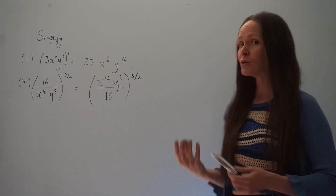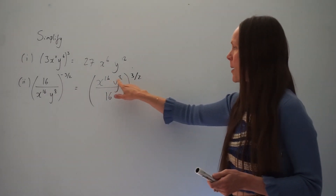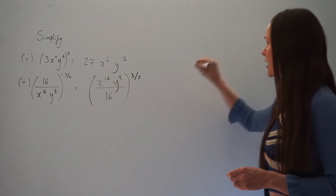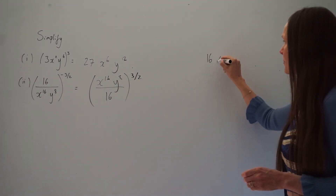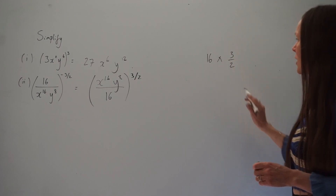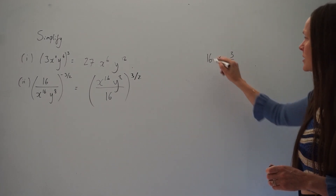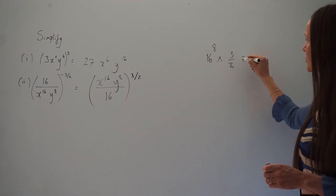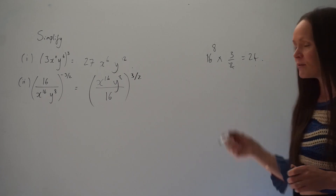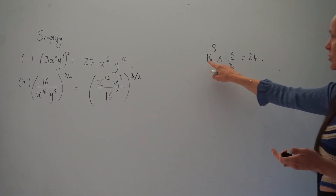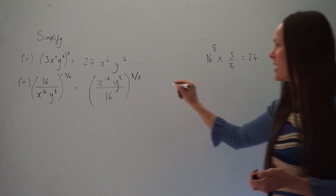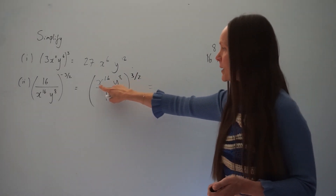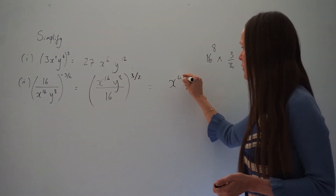Once you've switched the fraction upside down, the power is no longer negative — it's positive 3 over 2. You multiply the powers by the power outside the brackets. For x: the power is 16 multiplied by 3 over 2. Since 16 divided by 2 is 8, and 8 multiplied by 3 is 24, we get x to the power of 24.